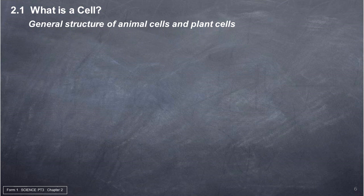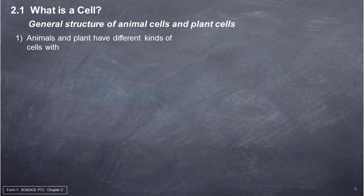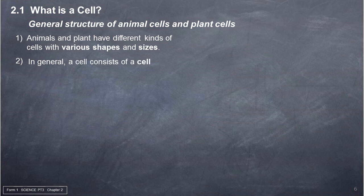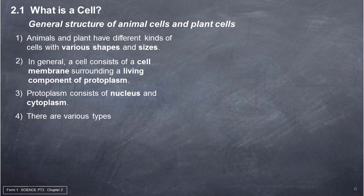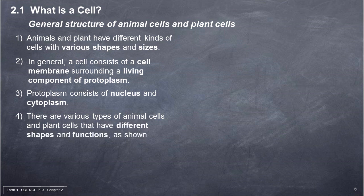General structure of animal cells and plant cells. Animals and plants have different kinds of cells with various shapes and sizes. In general, a cell consists of a cell membrane surrounding a living component of protoplasm. Protoplasm consists of nucleus and cytoplasm. There are various types of animal cells and plant cells that have different shapes and functions.